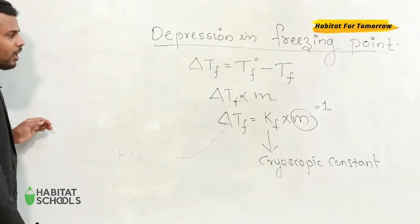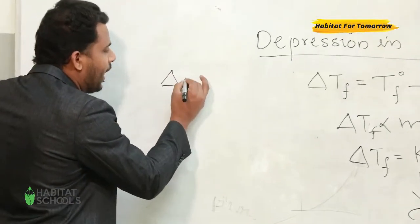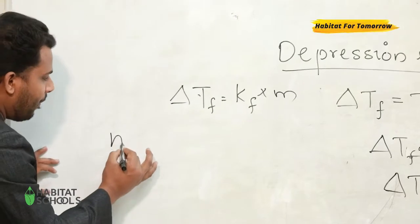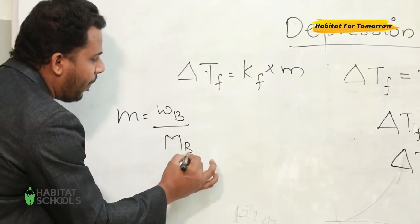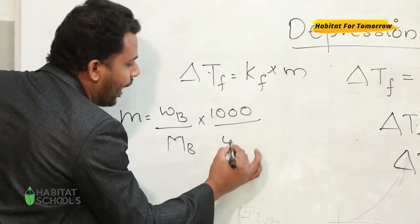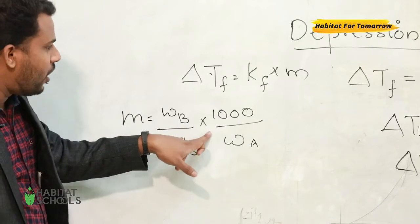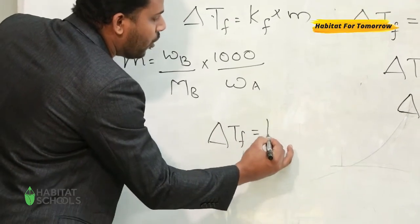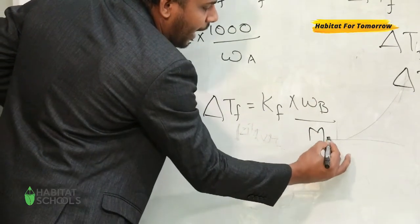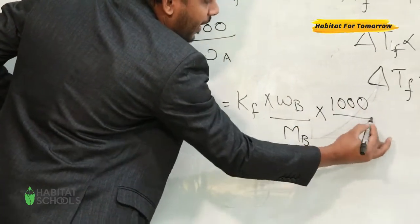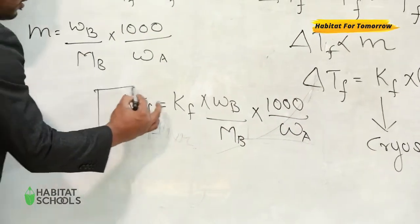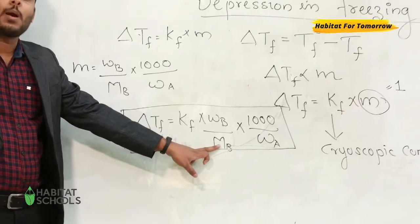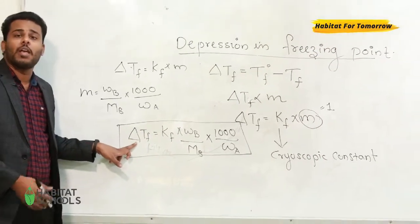Now let us check how we can correlate with the molar mass of the solute. ΔTf is equal to Kf into m. m stands for the molality. m is equal to Wb divided by Mp into 1000 divided by Wa. So this way we can correlate the relationship between molar mass of the solute and the third colligative property, that is depression in freezing point.